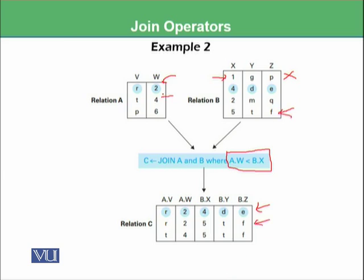Then value 4 is picked: 4 is not less than 1, not less than 4, not less than 2, but 4 is less than 5 — this is perfect, so this would be the third line. Then the next value P6 is picked: 6 is not less than 1, not less than 4, not less than 2, not less than 5 — so there will be no tuple from this row. You have seen that the number of tuples depends on the conditions we impose.